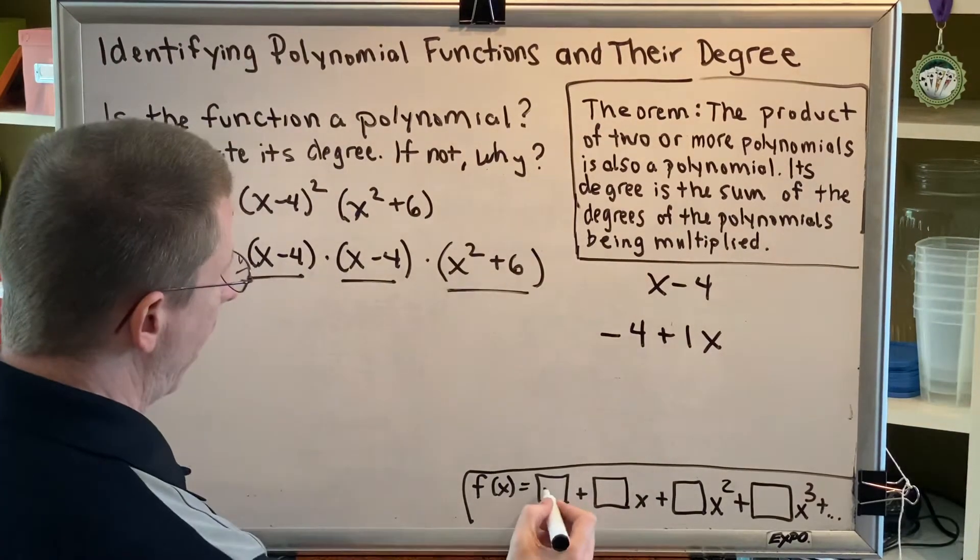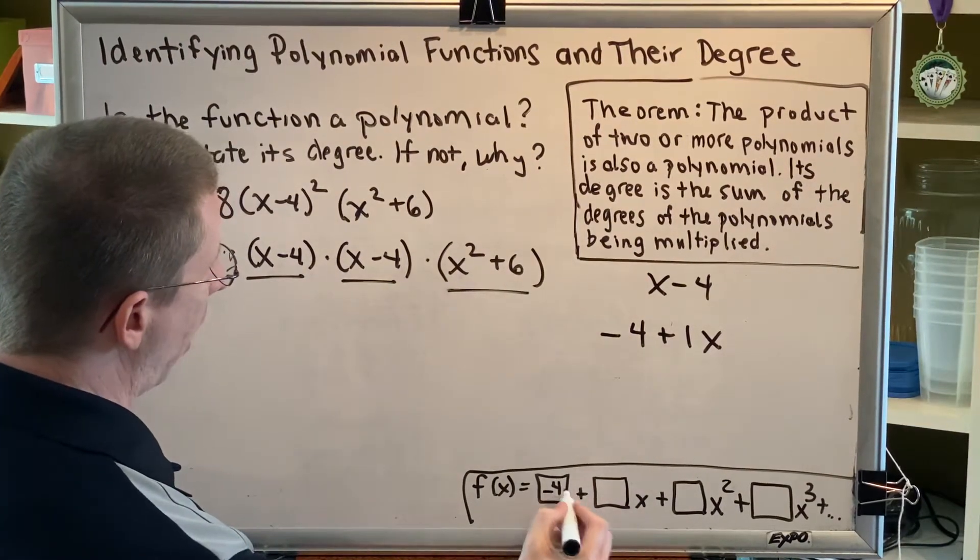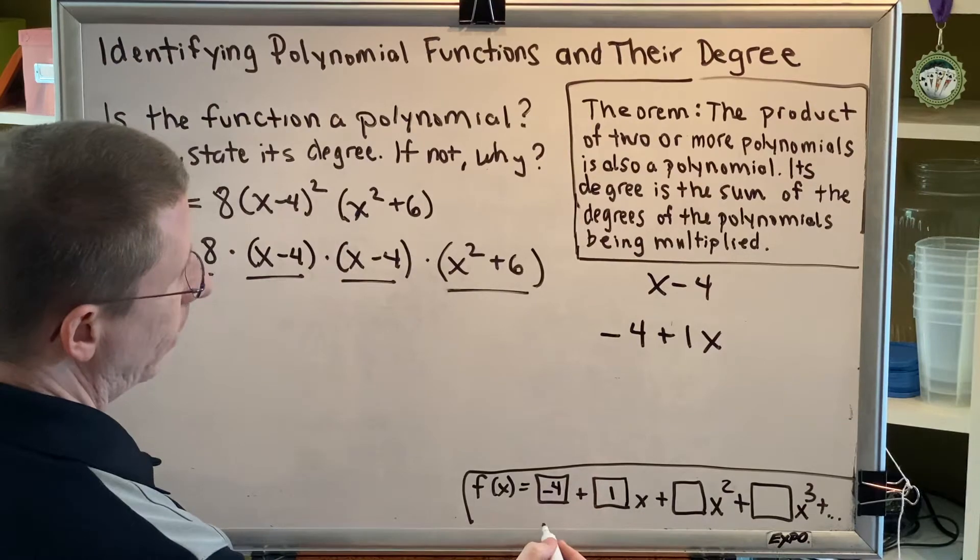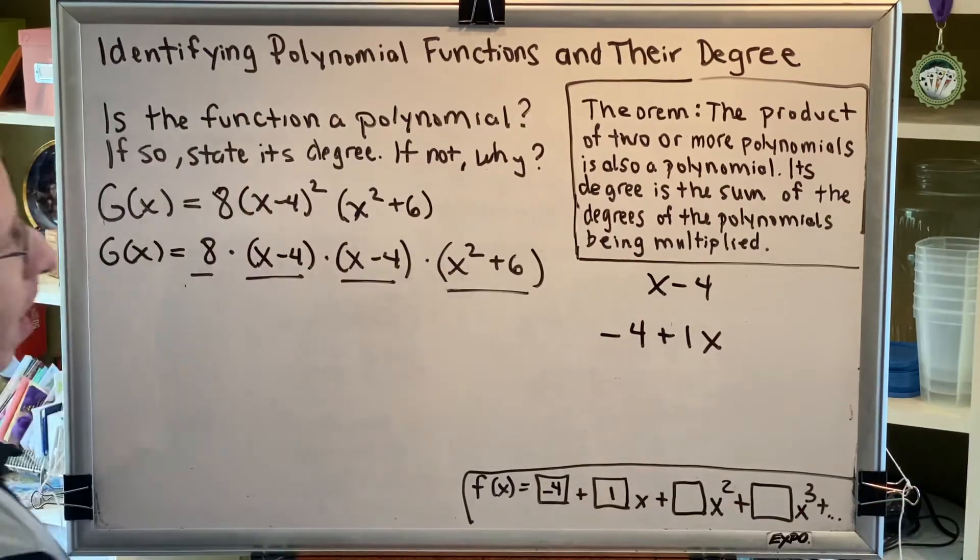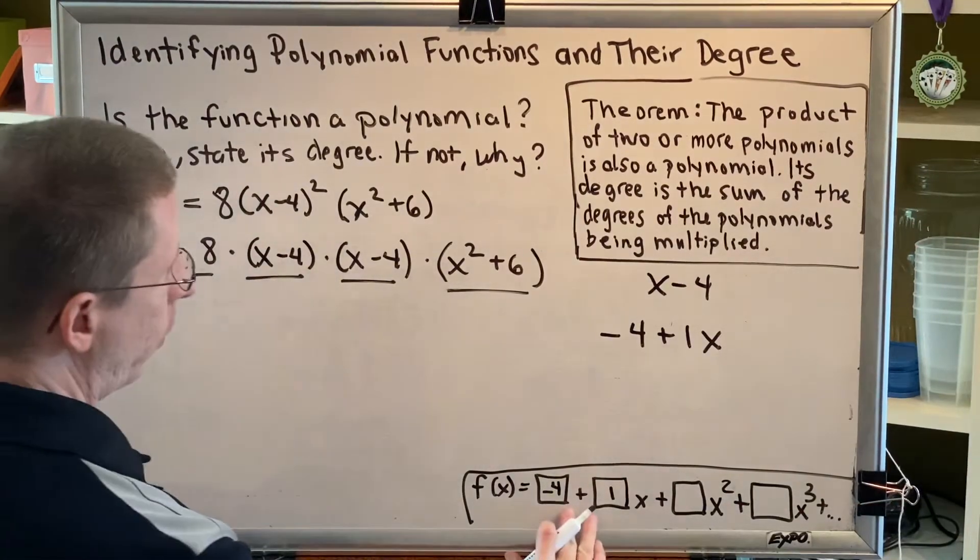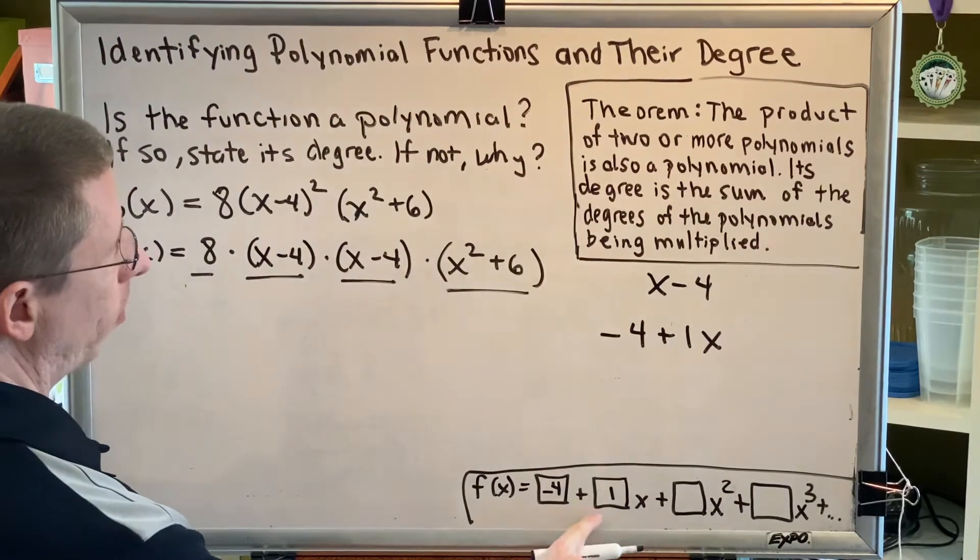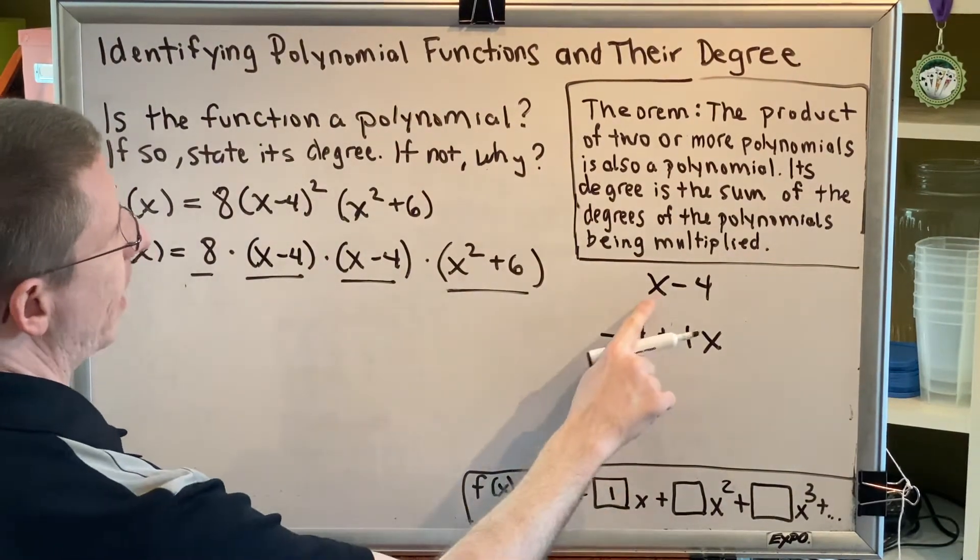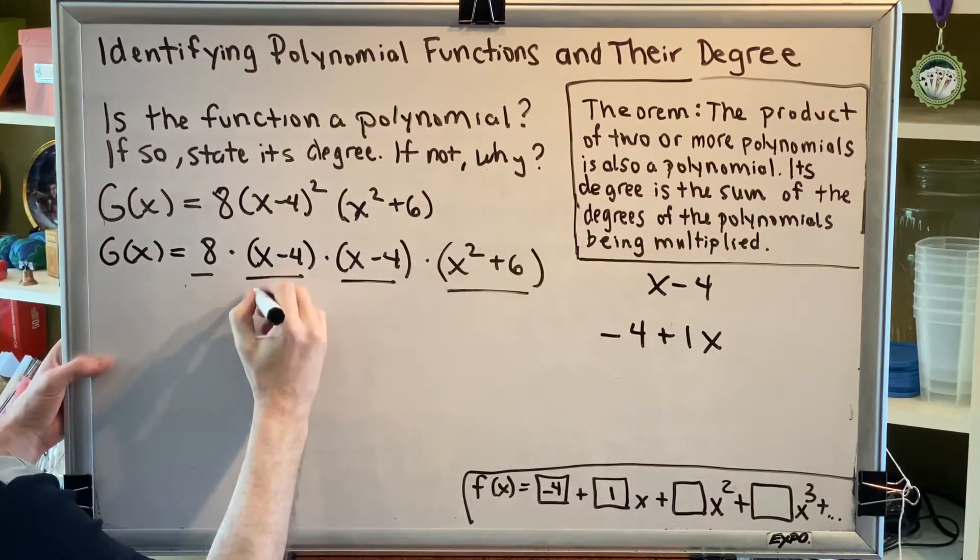So that tells me if I put negative 4 in the first box, 1 in the second box, and 0 in every box thereafter, then I have created a polynomial. Negative 4 plus 1x is the same as x minus 4, therefore this is a polynomial.